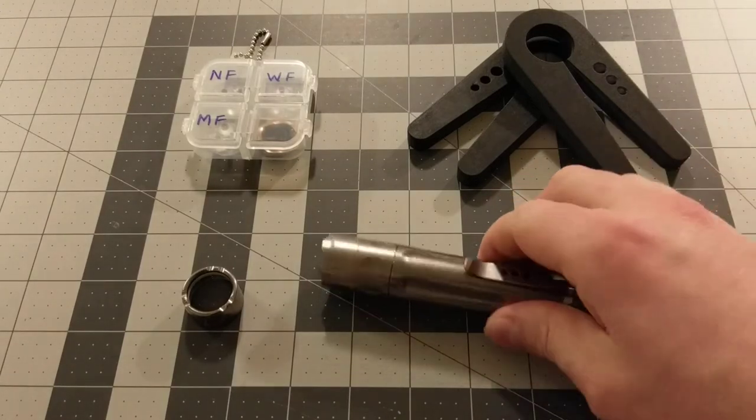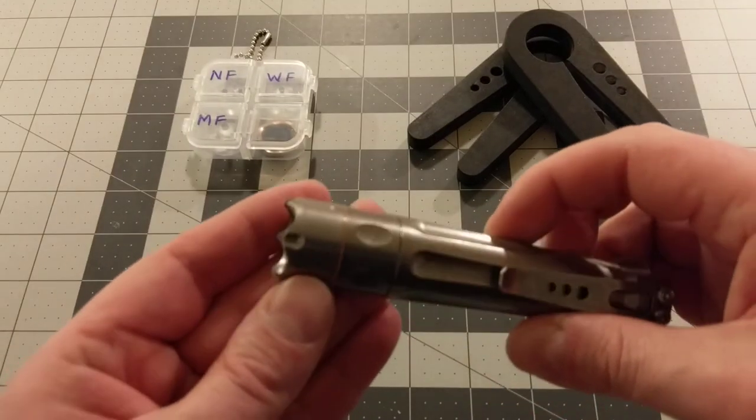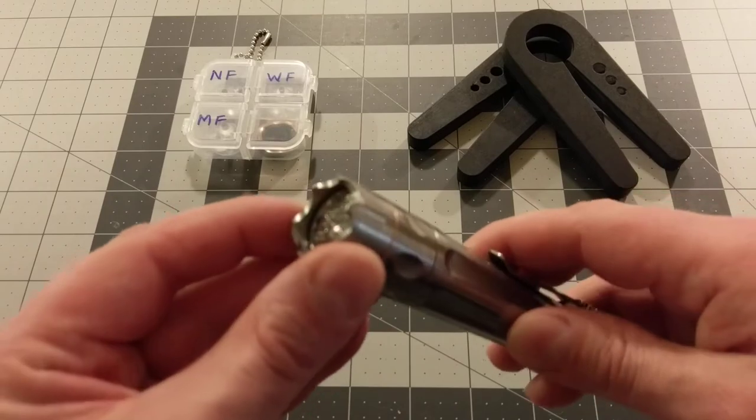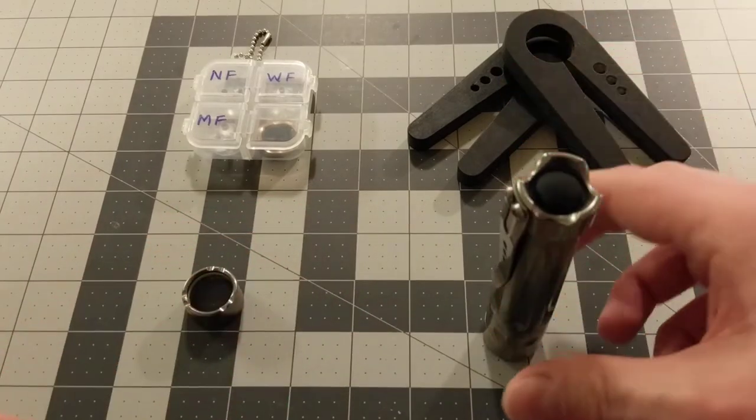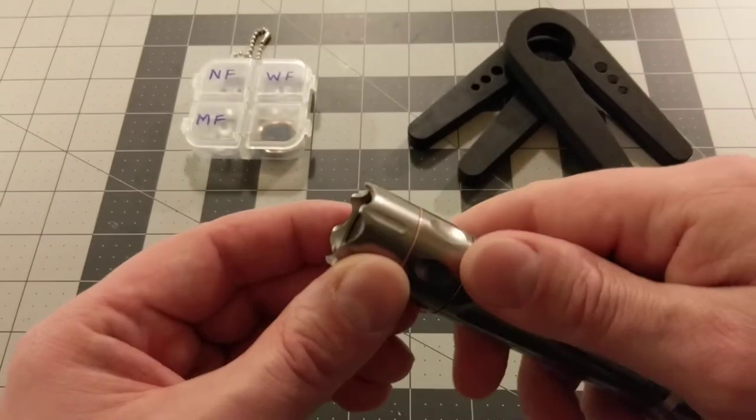So the bezel, pretty obvious, does a few things. Protects the light from impact on the front end of the light, holds the internals nice and tight, keeps dust and water out of the light, all that good stuff.